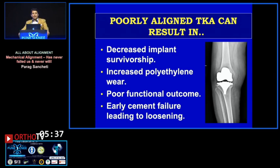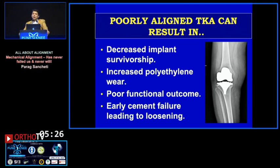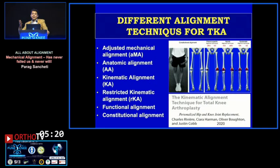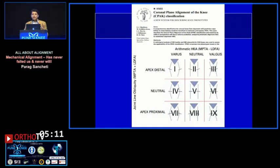We all know a poorly aligned knee can result in decreased survivorship, increased poly wear, and early cement failure. But the question is — especially after hearing about so many types of alignment — how do you define a poorly aligned knee? There's functional alignment, kinematic alignment, constitutional alignment, and a classification divided into nine types. It really makes the whole thing quite confusing.